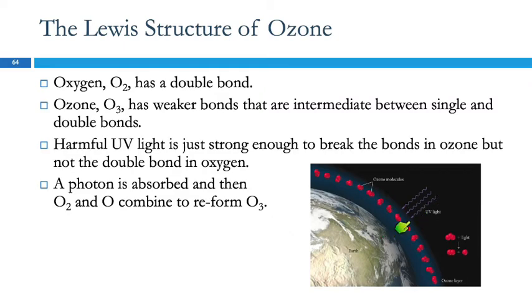So this UV light that comes in from the sun is strong enough to break a bond in the ozone molecule, but not in oxygen. So what happens is the ozone molecule will absorb a photon of light and break into oxygen molecules and an oxygen atom. And then those will reform ozone. That's how the ozone layer protects us from ultraviolet radiation.